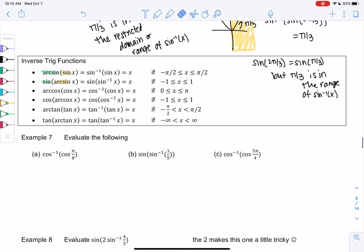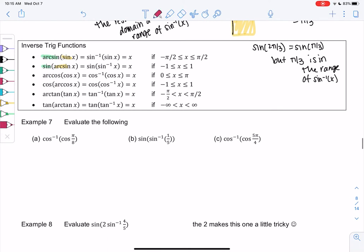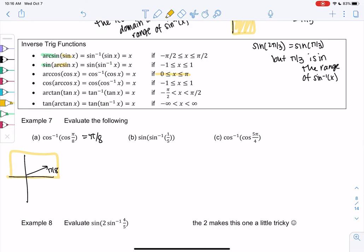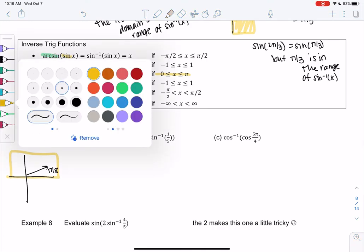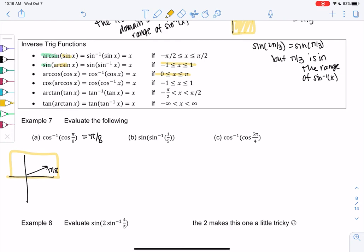Alright, let's try a couple more. I think it just makes more sense by doing it. So cosine inverse of cosine of π over 8. π over 8 would be right here. That is in the range. So it's just π over 8. That's in between 0 and π. Sine of sine inverse of 1 fifth. That's in the range. So it's in between negative 1 and 1. They cancel out. It's just 1 fifth.